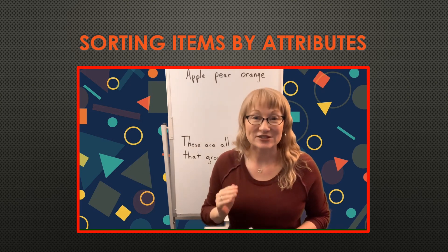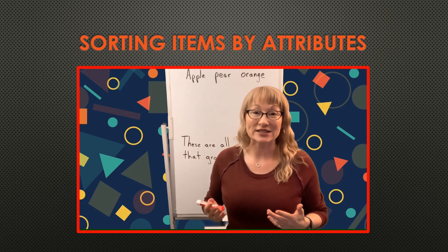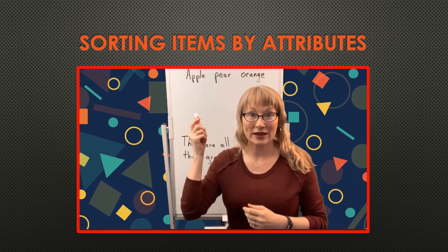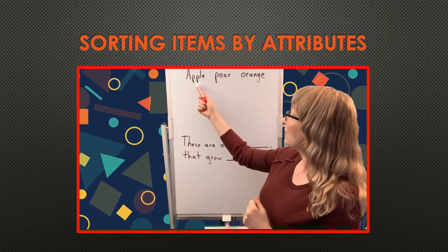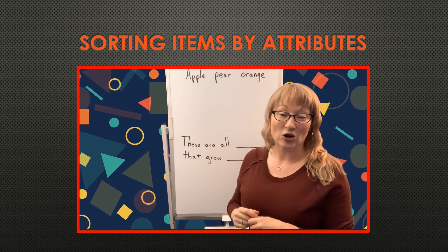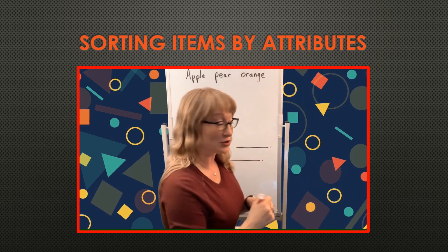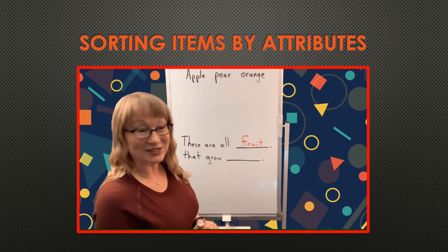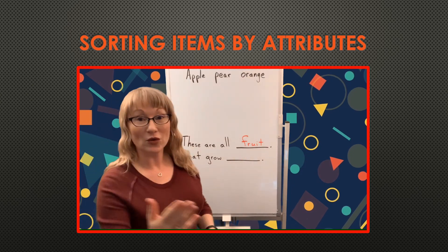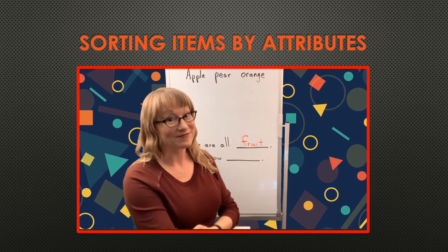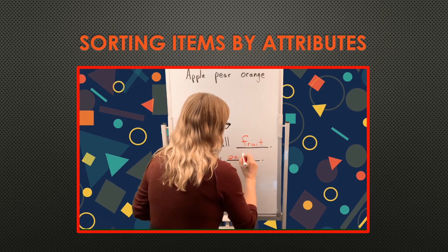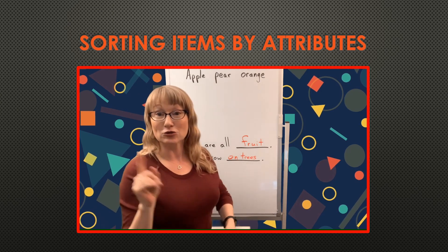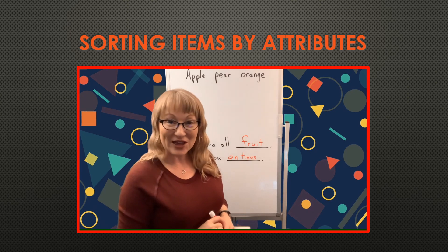So we're going to dive deeper into the world of attributes. When we look at the world around us, everything has attributes — not just shapes. Here's my example: I have three words — apple, pear, orange. What do all these things have in common? Well, they're all fruit. These are all fruit that grow on trees, on farms. Both are things they have in common — they grow on trees, they grow on farms. That's multiple different attributes. You get the picture of how this works.